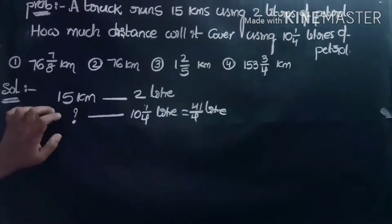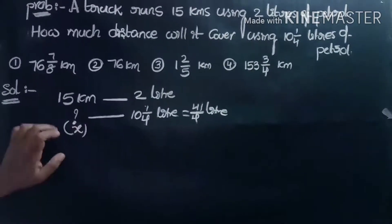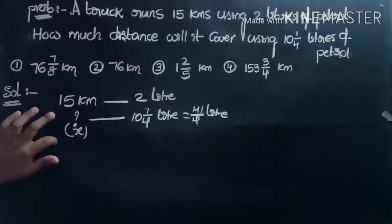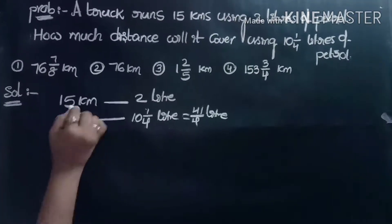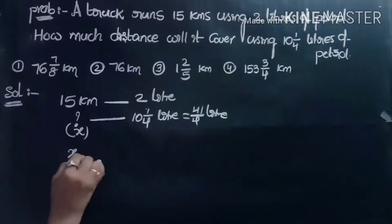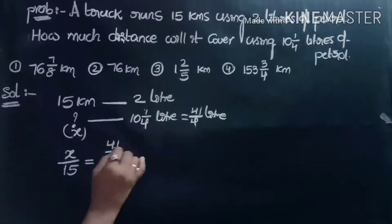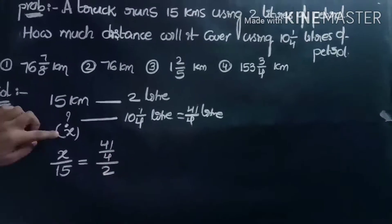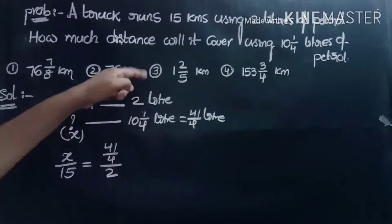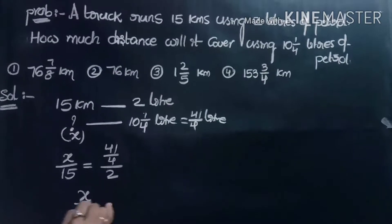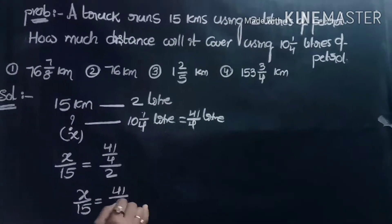First, we take the distance value as x. The distance covered is equal to x. Then, by proportionality: x/15 = (41/4)/2. That is, x/15 = 41/8, since 4 times 2 is 8.